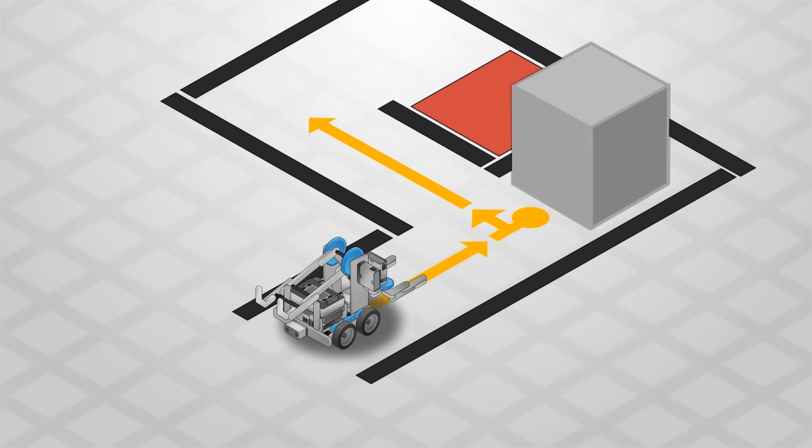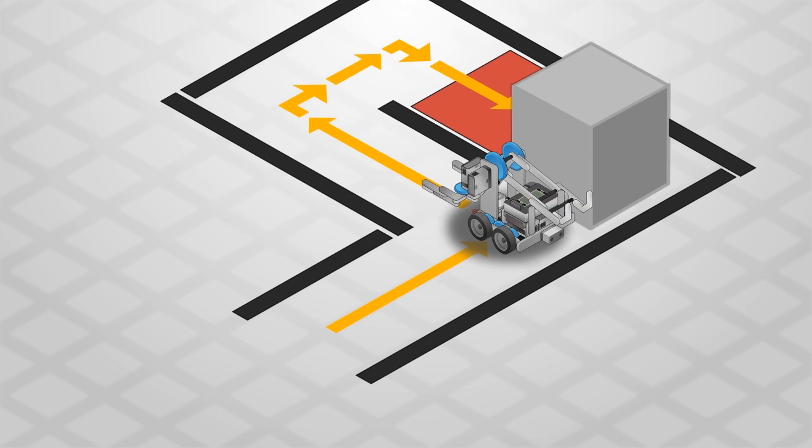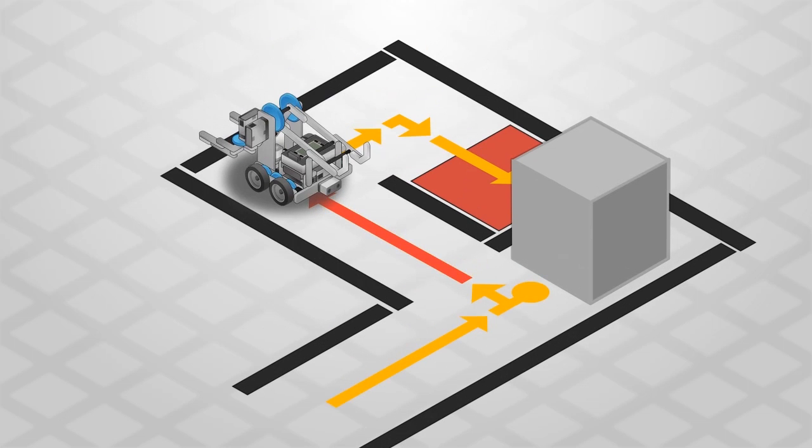So try breaking that behavior down into smaller parts. Following the path involves moving forward, then turning, then moving forward again, turning the other way, and so on.